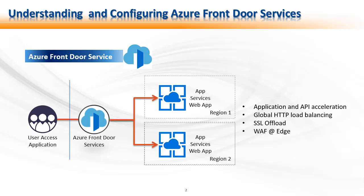AFD provides WAF, which is the Web Application Firewall feature, for your application to provide security from DDoS attacks — denial of service attacks. The way AFD works is that it caches the static content of your application, which it returns when a user tries to access the application without the need to do a server trip.